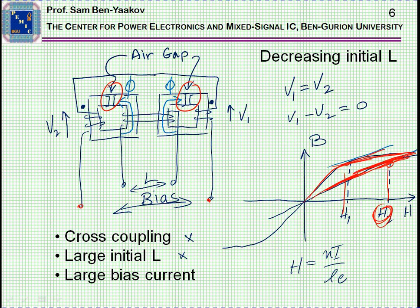This means that, in this case, we're going to need a very heavy current in order to push the core into saturation. So, we have solved this one, we have solved this one, but still we have this problem of large bias current.